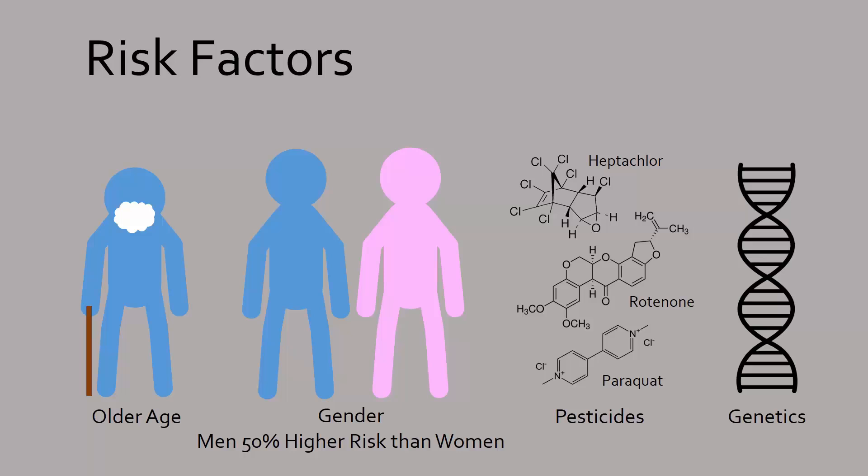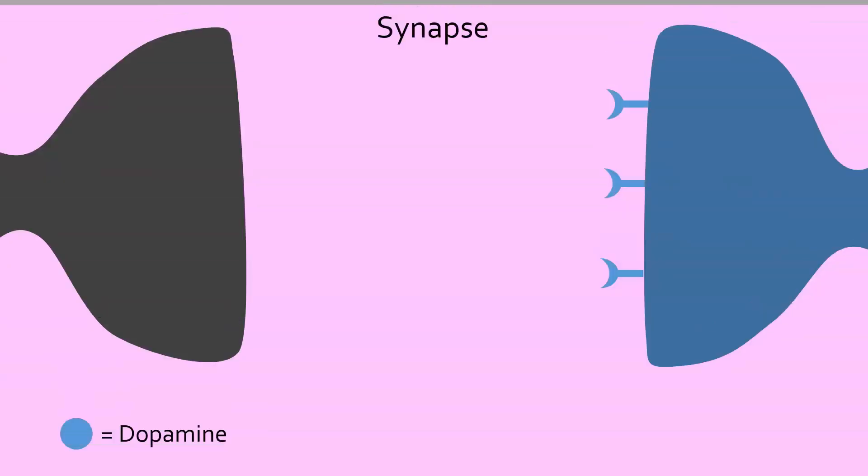No cure that reverses the damage to dopaminergic neurons has been found. However, since Parkinson's disease is due to a lack of dopamine, it makes sense that treating this disease would involve increasing dopamine levels. Dopamine is naturally broken down in the synapse by enzymes, so prolonging its time in the synapse can indirectly increase its effect. This can be done by drugs that inhibit those enzymes.